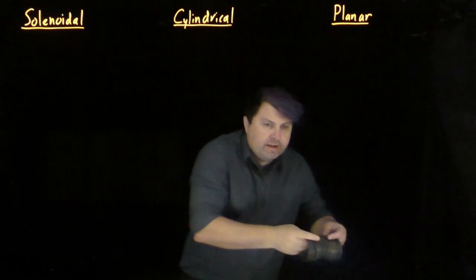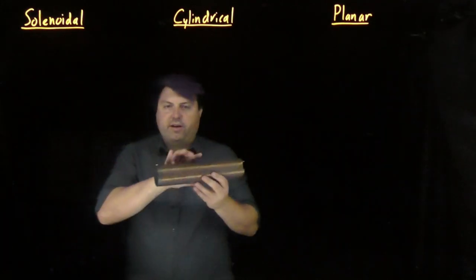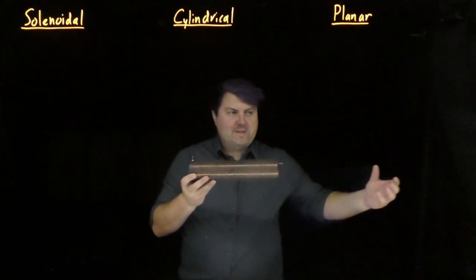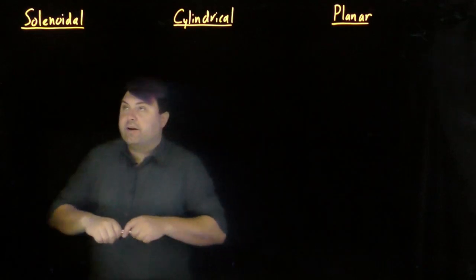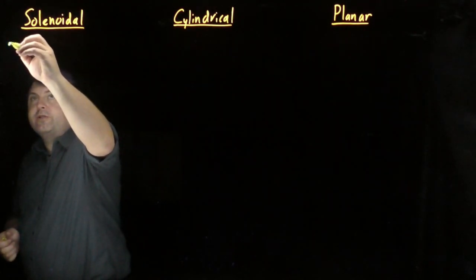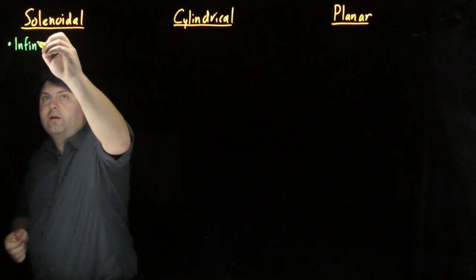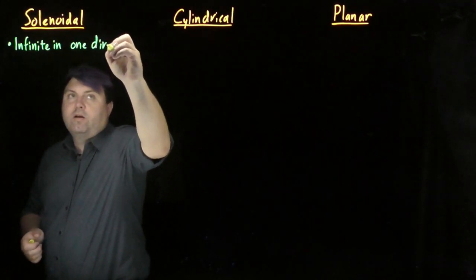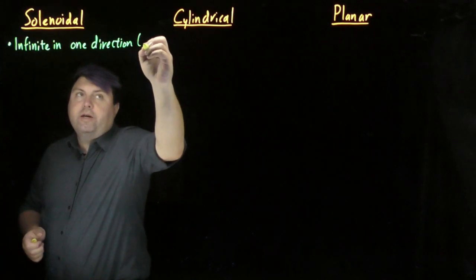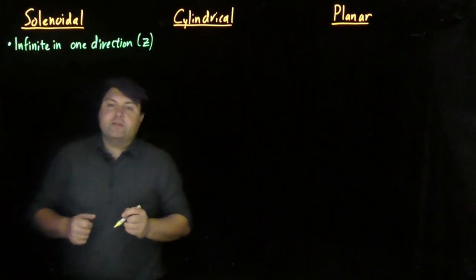So solenoidal is a solenoid. A slinky is a pretty good example if you can see it. If you can't, then we're going to pull up a non-infinite solenoid, but we're going to assume it extends to infinity. So our first thing about our solenoid is that they are infinite in one direction. And we are going to call this direction the z direction.